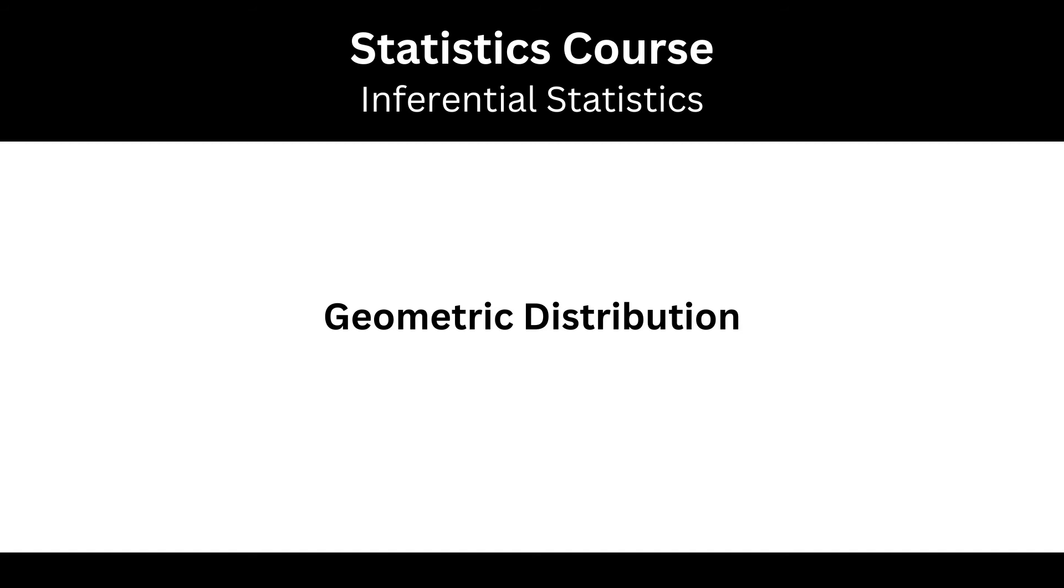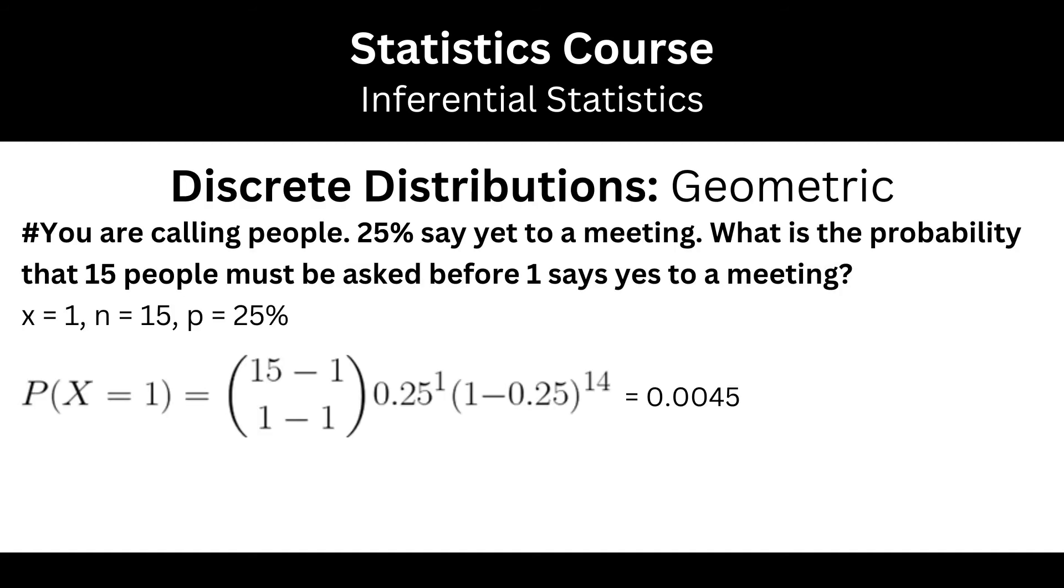Just like the binomial had a special case, here is the same thing. Instead of having 5 saying yes to a meeting, you want to know just for 1. So, what is the probability that 15 people must be asked before 1 says yes to a meeting?